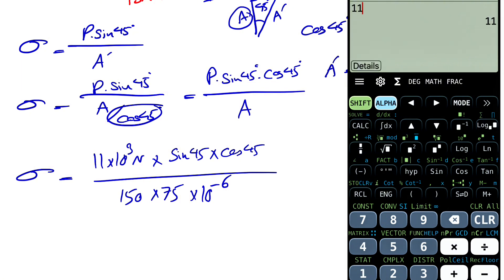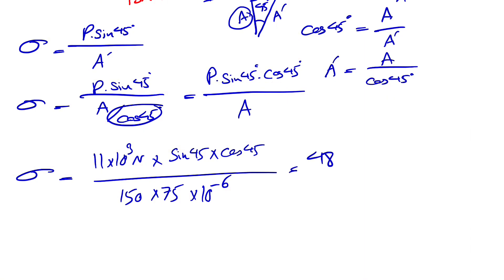We have 11,000 times cosine of 45 times sine of 45 divided by 150 divided by 75 times 10 to the 6. So it will be 488.9 or 489 kilopascal. So we're going to get 489 kilopascal. That would be the answer for the normal stress.